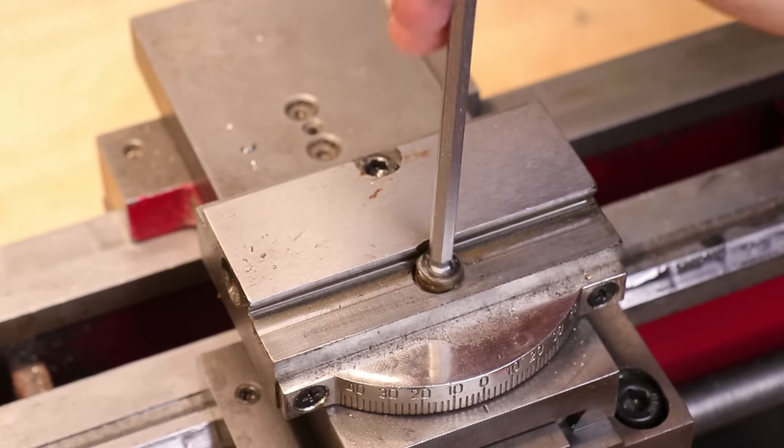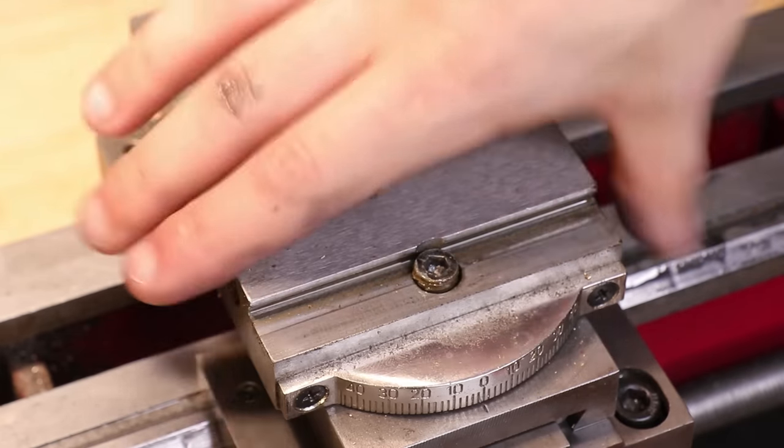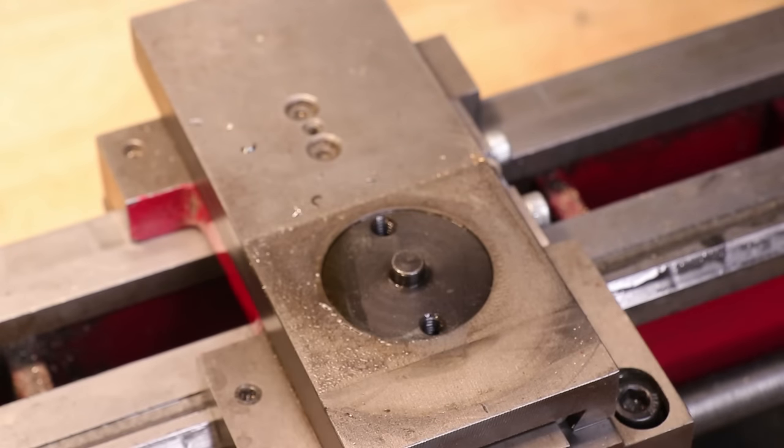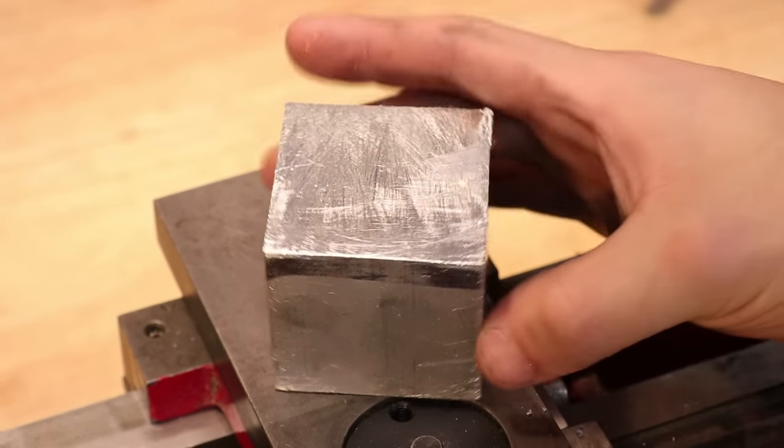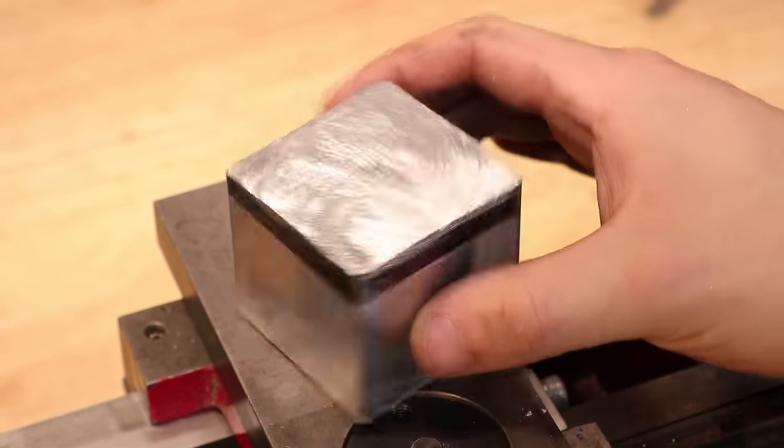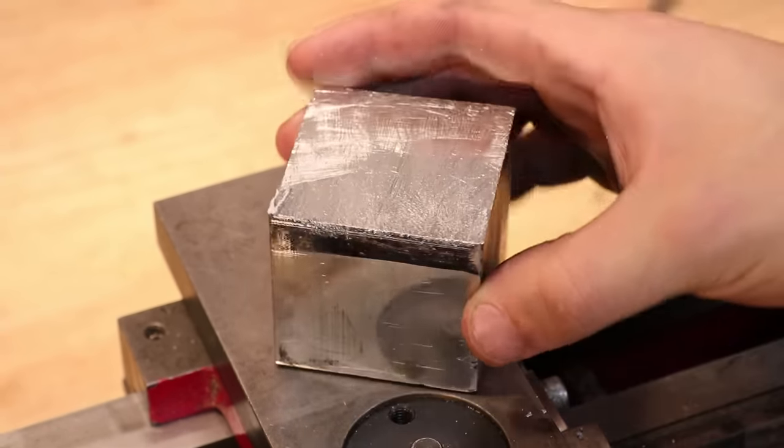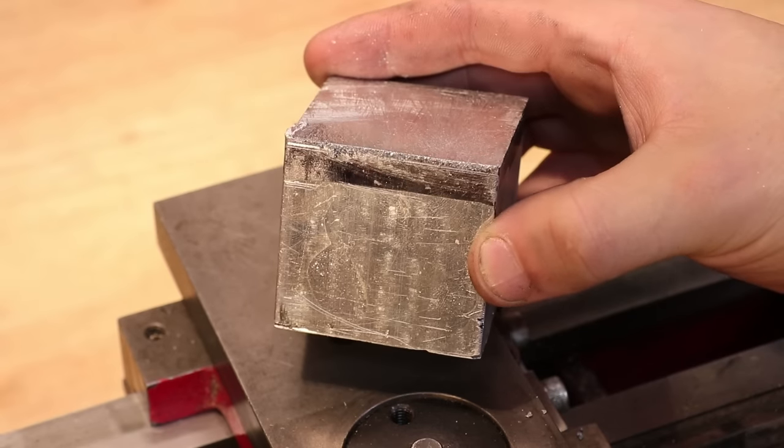The solid tool post will be a 40mm tall piece of aluminum that needs to be milled flat and holes drilled in it so it can mount to the rotating plate on the cross slide.